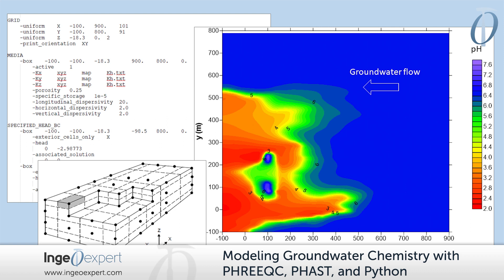Our next step will be to bring chemical transport modeling into the mix. In this part of the course, we will work with PHAST, another public domain simulator from the U.S. Geological Survey. PHAST combines PHREEQC with a finite difference-based flow and transport model for groundwater systems. We'll learn how to use PHAST to simulate the chemical evolution of an aquifer subject to chemical processes that are distributed in space and influenced by external boundary conditions.